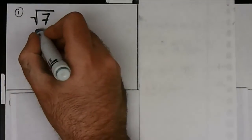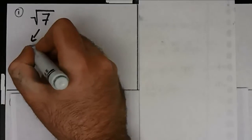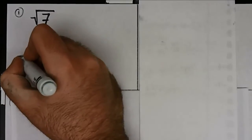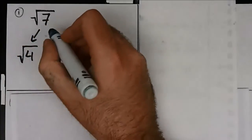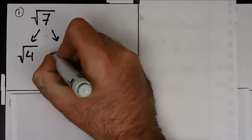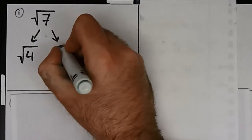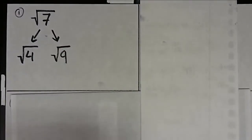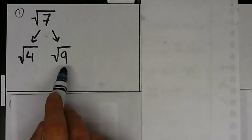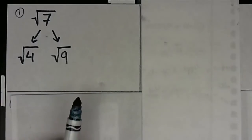The one right below is 4, and the one right above is 9. So you have your list of perfect squares: 1, 4, 9, 16, 25, and so on. And 4 is the smallest one right below 7, and 9 is the biggest one right above 7.